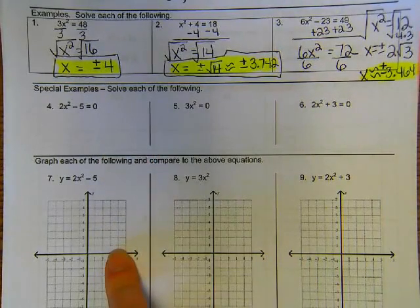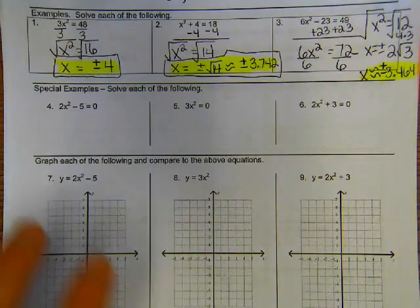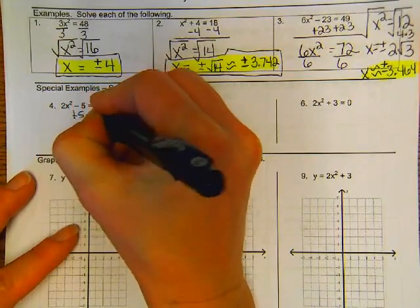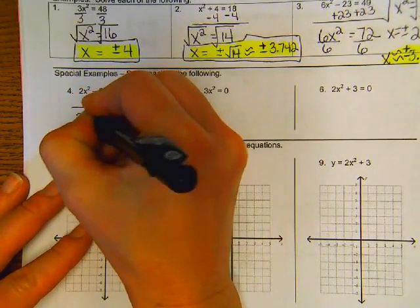We're going to solve it now by doing what we did before. So we should add five first. Agree? Okay, would you add five to both sides?